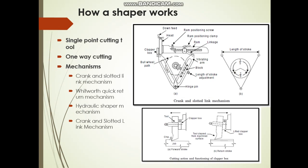The motor's rotary power is converted to reciprocating motion. One mechanism used is the crank and slotted link mechanism. The block rotates, causing the whole arm to vibrate, moving the ram left and right. This mechanism is the crank and slotted mechanism, but the shaper in our lab uses the Whitworth quick return mechanism.